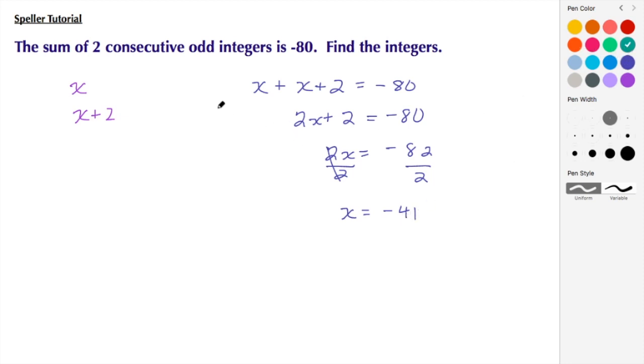So here we found that the first of the consecutive odd integers is negative 41, and then we substitute into our second expression, so negative 41 plus 2, and that tells us that the second odd integer is negative 39. So these two here are our answers.